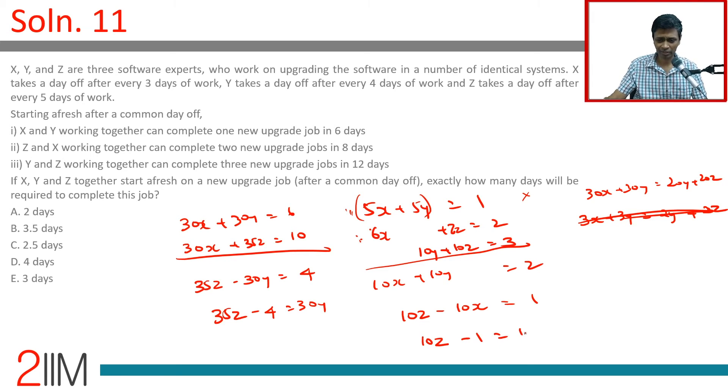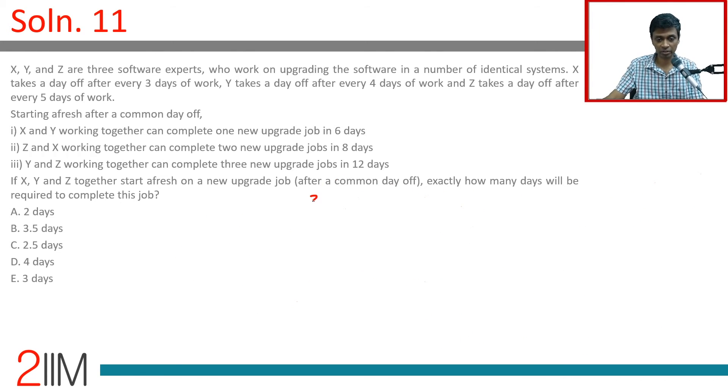10 Z minus 1 is 10 X. 5 Y is 35 Z minus 4, divided by 6. 5 X is 10 Z minus 1, divided by 2.